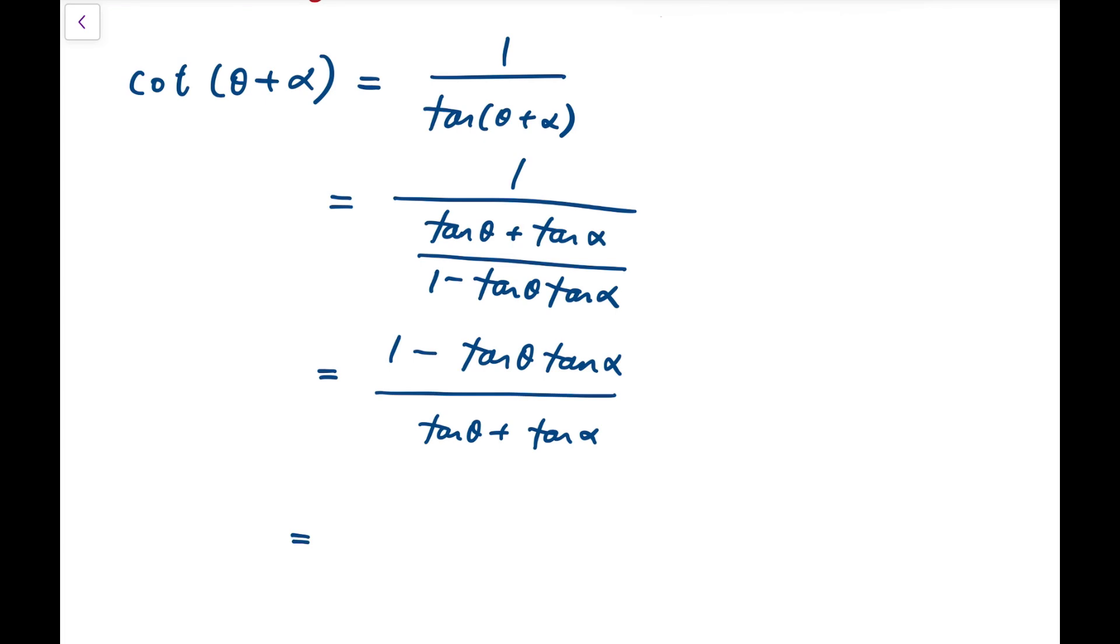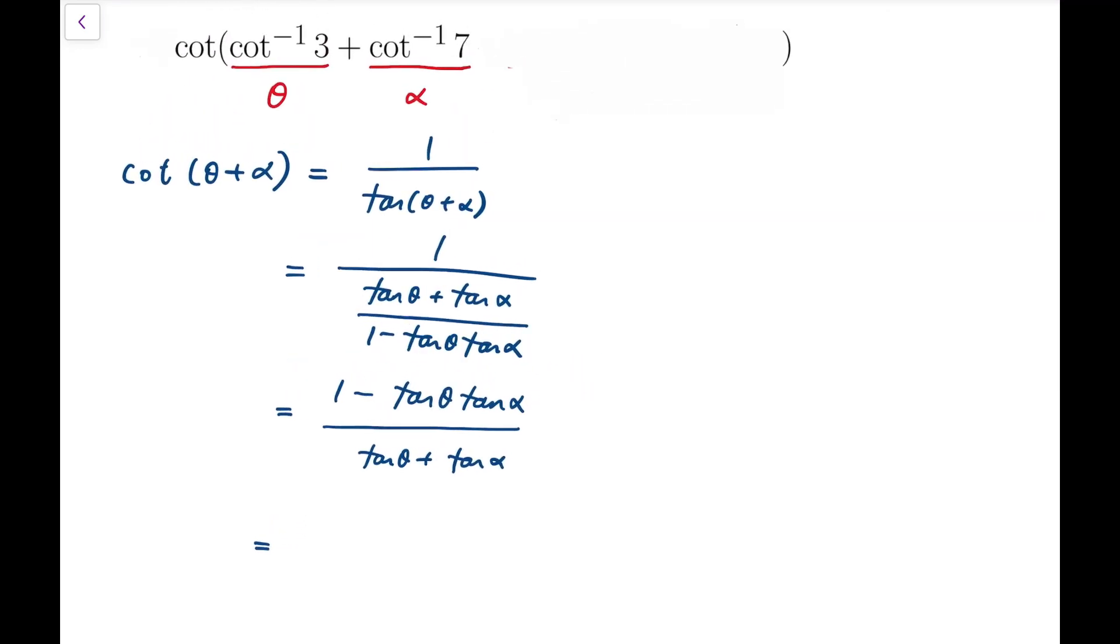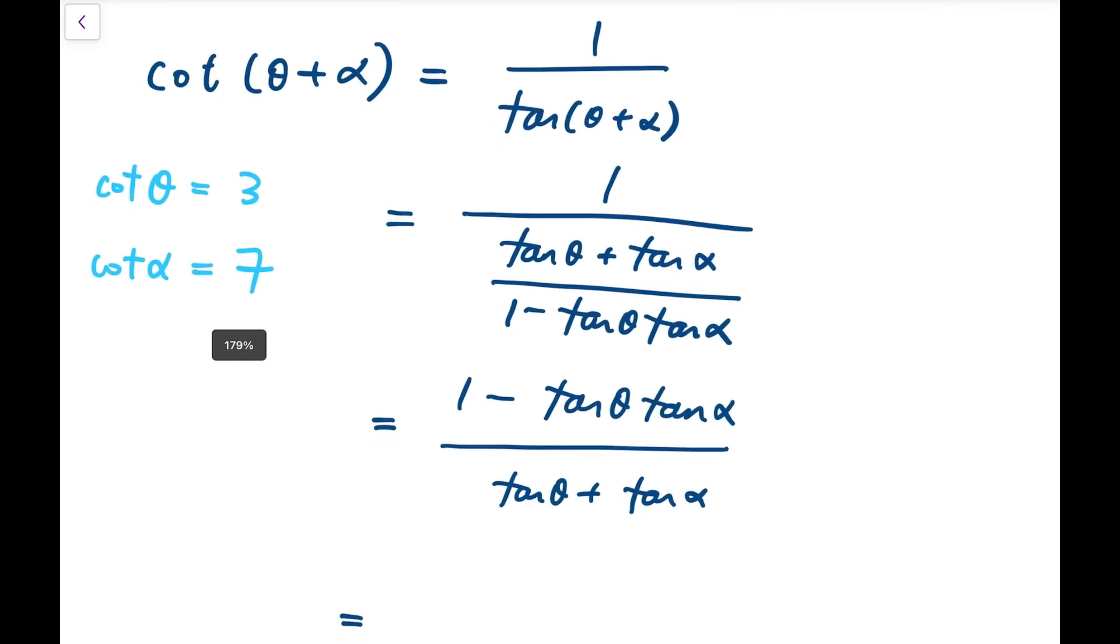We're not done yet because I want to rewrite this in terms of cot theta and cot alpha. Because we know that cot theta, under our definition, is equal to 3, while cot of alpha is equal to 7.